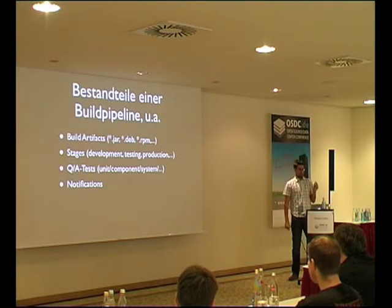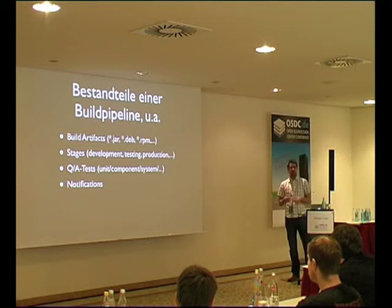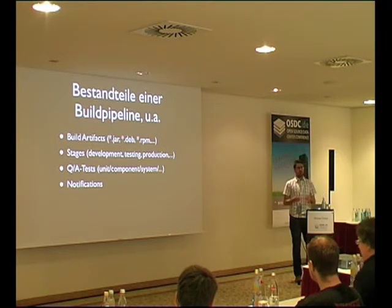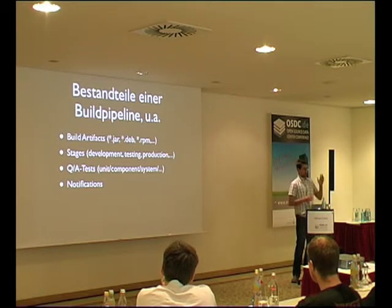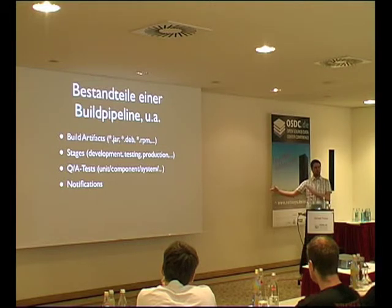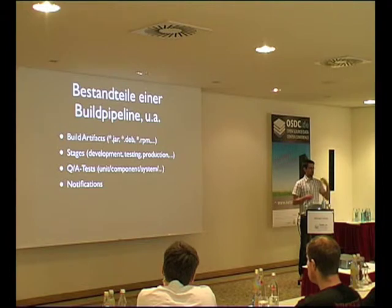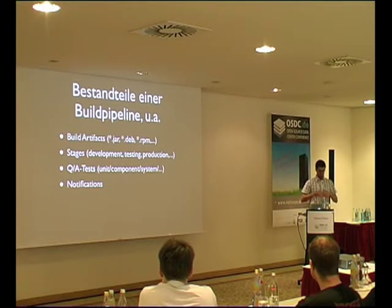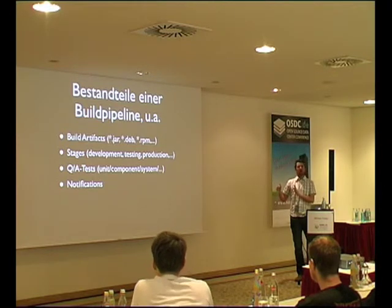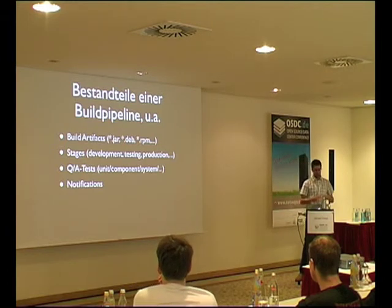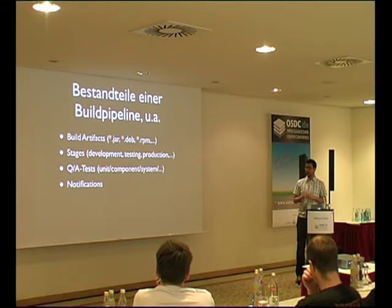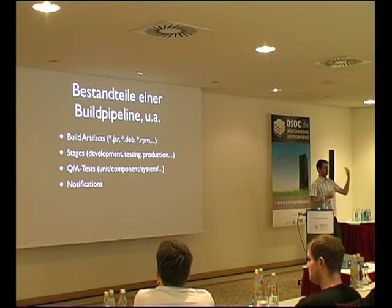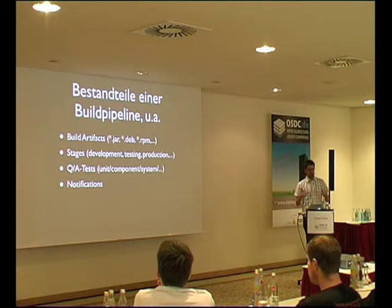Die wichtigen Bestandteile einer Build-Pipeline: Bei den Build-Artifacts können wir im Rechenzentrum-Umfeld zum Beispiel Debian-Pakete, Charts oder RPMs hernehmen. Wir können Stages definieren – eine Entwicklungsumgebung, eine Testumgebung, eine Produktionsumgebung. In der Entwicklung darf alles kaputt sein, in der Testumgebung muss alles funktionieren, und was in der Testumgebung funktioniert, reichen wir in die Produktionsumgebung weiter. Wie viele Stages man macht und wie man die Barrieren einbaut, ist jedem überlassen. Man kann Unit-Tests, Komponenten-Tests und System-Tests definieren und mit den Stages vereinen.